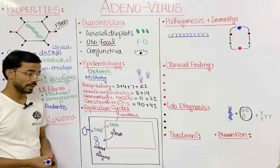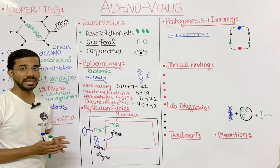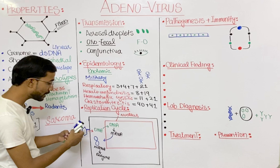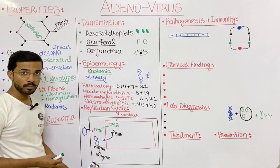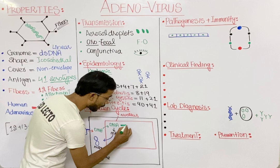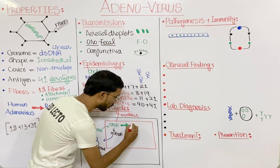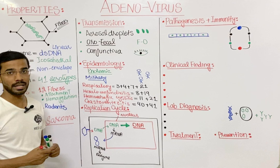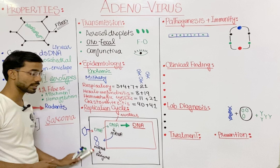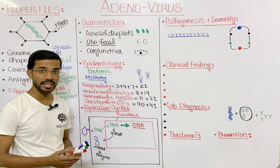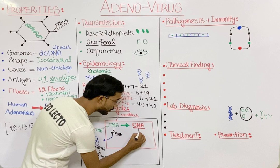These early enzymes are very helpful in replication of the viral genome. Following early protein synthesis, you will see replication of the viral DNA, which occurs through a viral-encoded DNA polymerase — this is part of the early processes.